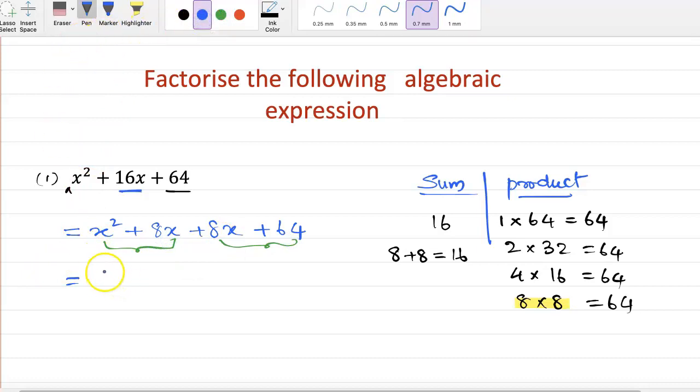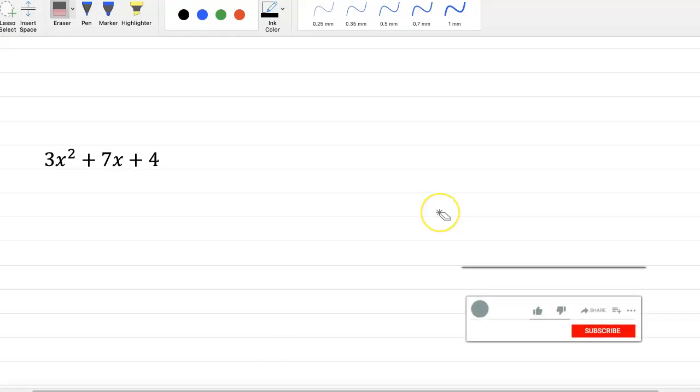The common factor is x into x plus 8. Here 8 is a common factor, so 8 into x plus 8. So the final answer is x plus 8 times x plus 8.